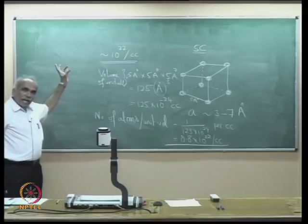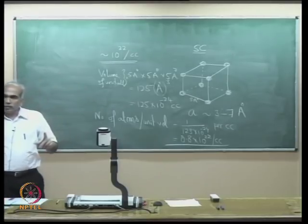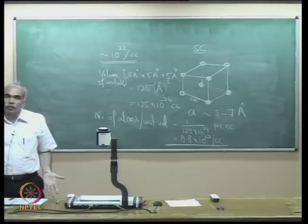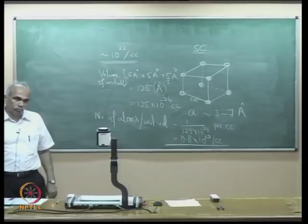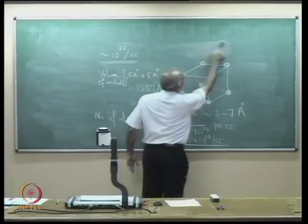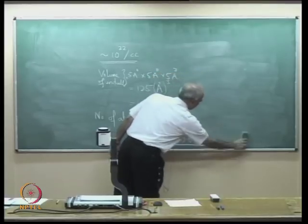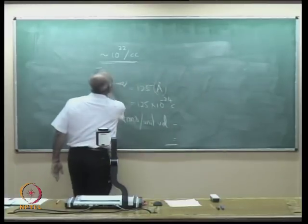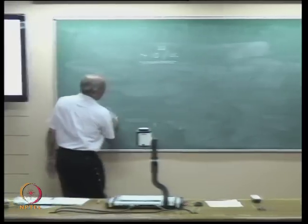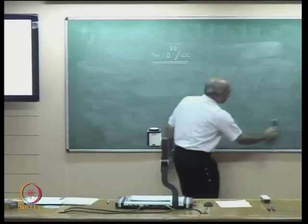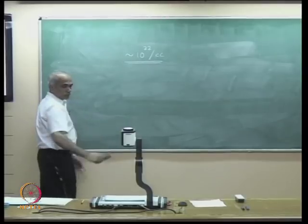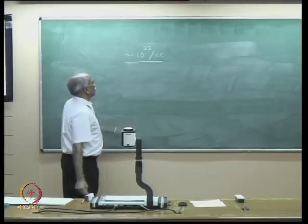If each atom contributes one valence electron, then the number of valence electrons per unit volume is of the order of 10²². This is a quick calculation to get an estimate — I would like you to have this kind of practice to estimate very quickly starting from fundamentals.